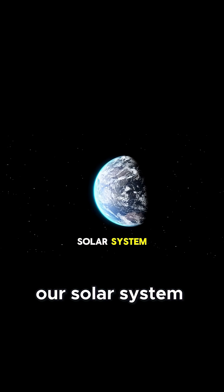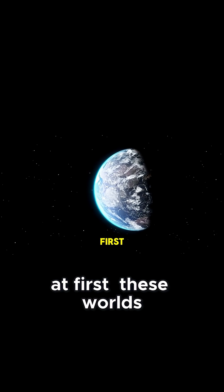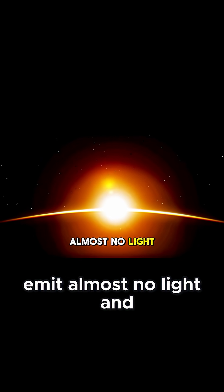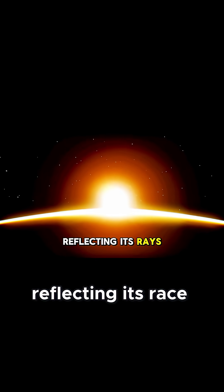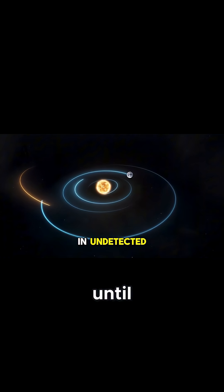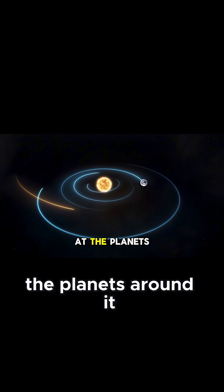If one entered our solar system, we might not notice it at first. These worlds emit almost no light, and unless it passed close to the sun, reflecting its rays, it could slip in undetected until its gravity began to tug at the planets around it.